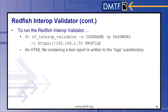To run the Redfish Interop Validator, you would run the following from the command line: RF interop validator with your username, password, service address, and the file path to the profile to test against. After a few minutes, an HTML file containing a test report is written to the log subdirectory.